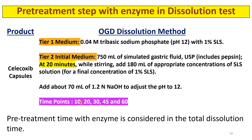Add about 70 ml of 1.2N NaOH to adjust the pH to 12. The time points are 10, 20, 30, 45, and 60 minutes. Up to 20 minutes, pre-treatment is done; from 30 minutes to 45 and 60 minutes, the drug release is checked. The pre-treatment time with enzyme is considered part of the total dissolution time — it is not separate time.